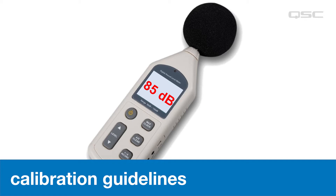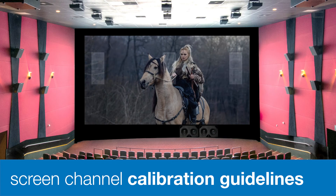Using a decibel meter set to the C-weighted setting, pink noise is run through each loudspeaker individually or in groups of surrounds, which we'll cover here in just a minute. The most critical loudspeakers in the sound system are the left, center, and right screen channels. This is where most dialogue, music, and effects are localized. All three loudspeakers should be well-matched. Any inconsistencies, especially in the human voice frequency range, can get really distracting for the audience.